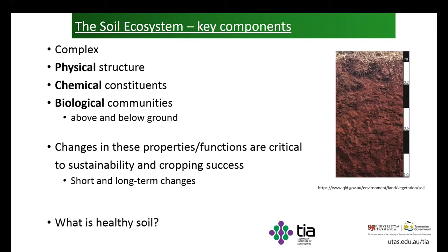Soil is quite a complex system, but we can break it into three major components: the physical structure, the chemical constituents, and the biological communities. Changes in these properties and functions are critical to sustainability and cropping success. Some changes can occur in the short term — for instance, if we add lime to the soil, we'll get a quick and sudden alteration in pH. Other changes are very much long term; if we're looking to build soil structure or improve soil carbon levels, that might take three or four years.